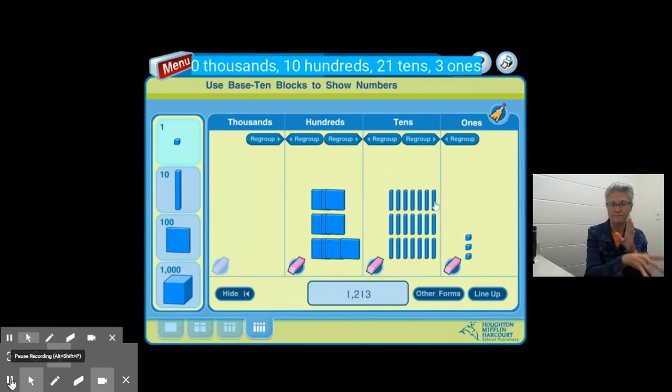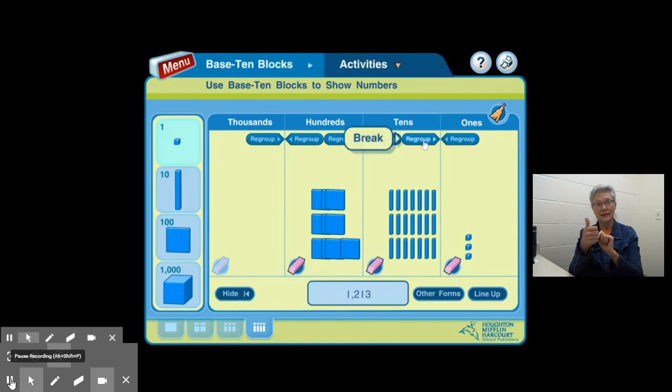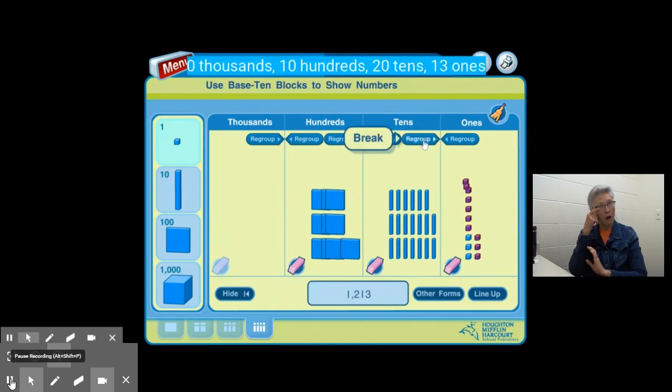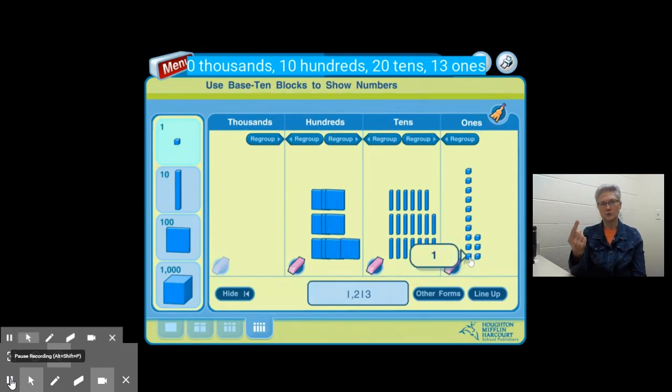I can also regroup tens into ones. If I regroup one ten into ones, I'm going to get 10 extra ones. Here are my 10 ones that I had regrouped from the tens place, plus my three extra ones that were already there.